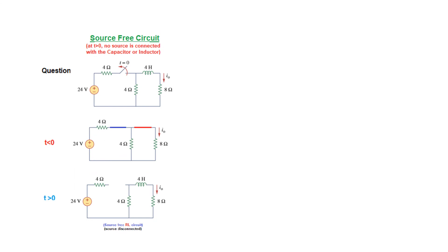For your understanding, here is an RL circuit with an inductor — the exact same technique applies. The switch is opened at t = 0, meaning before t = 0 it is closed. As you know, an inductor behaves like a short circuit after being subjected to a DC source for a long time. So at t > 0, when the switch is opened, the inductor circuit is no longer connected with any battery or power source. Therefore, this is also an example of a source-free circuit.